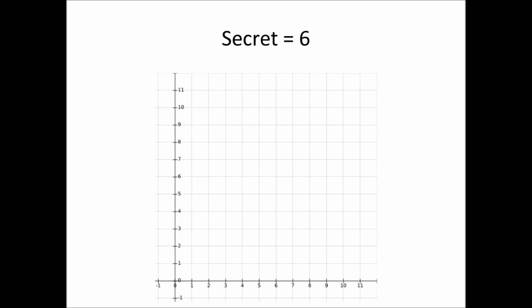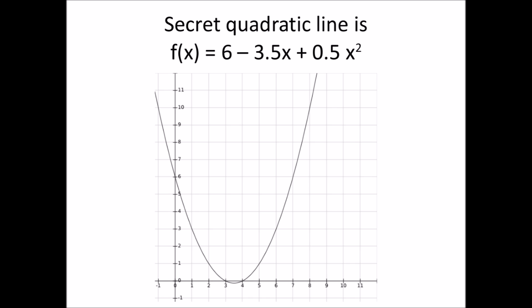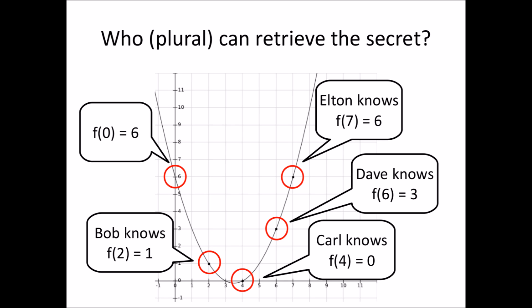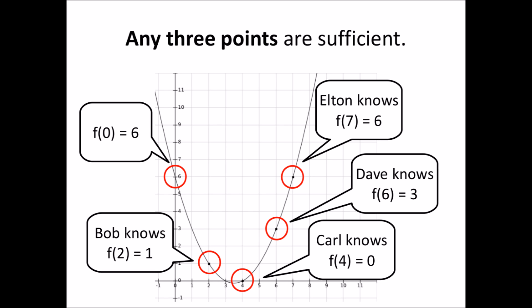So, of course, we can try to use a quadratic line to split Alice's secret instead. Remember that the secret value was 6, and now Alice chooses this particular secret polynomial, again choosing f of 0 to be 6 for the secret value. And as before, she distributes different points on this line — the shares — to a number of people. Since this is a quadratic line, we need at least three points to determine the line and to retrieve the secret. So, any three of the shares need to be combined in order to learn that f of 0 is 6.